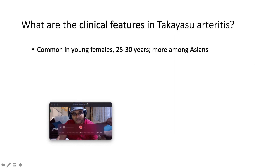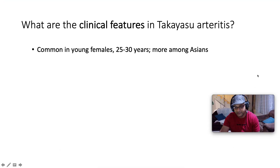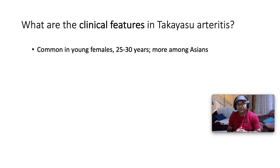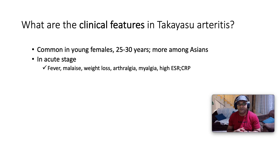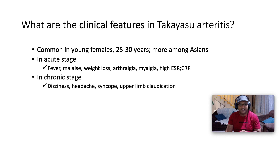The clinical features of Takayasu arthritis: it's common in young females between the ages of 25 to 30, more amongst the Asian population. In the acute stage the patient may complain of fever, malaise, weight loss, arthralgia, myalgia, or very nonspecific symptoms. A clue is that inflammatory markers are high — a high erythrocyte sedimentation rate as well as a high C-reactive protein.